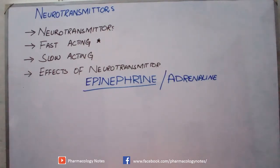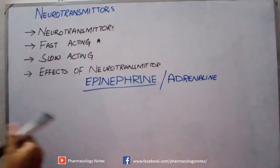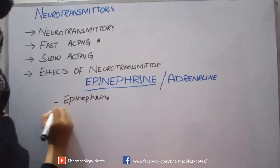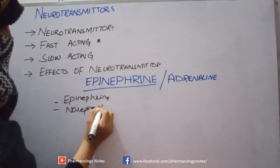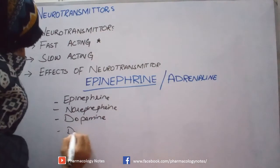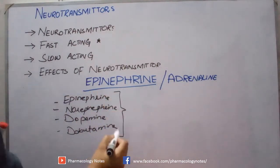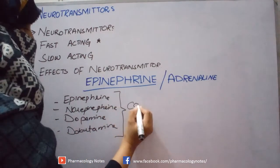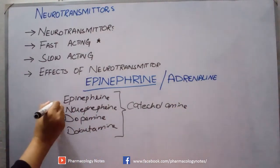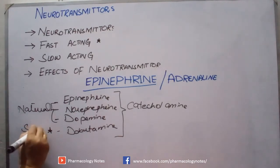Epinephrine is one among the catecholamines. There are four catecholamines: epinephrine, norepinephrine, dopamine, and dobutamine. These are substances having a catechol ring in their structures, which is why they are termed catecholamines — amines having a catechol ring. Among these, the first three are naturally occurring, while dobutamine is a synthetic catecholamine.